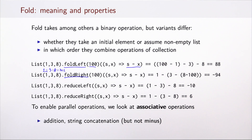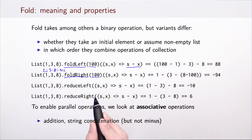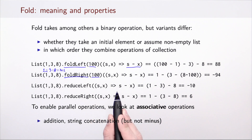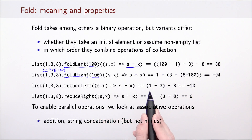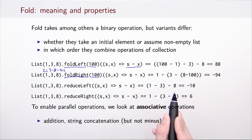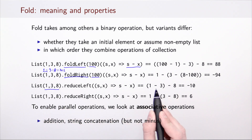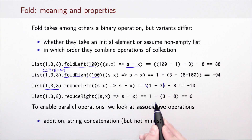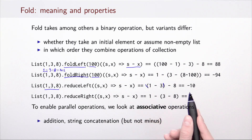We will mostly be concerned with a variant called reduce. Reduce does not take an additional element like fold left and fold right — instead it uses an element of the list itself as the starting point. If we take list 1, 3, 8 and do reduce left with minus, we take elements in the same order they appeared and put minus between them grouping from left to right. So the result is 1 minus 3, which is minus 2, then minus 8, giving minus 10.